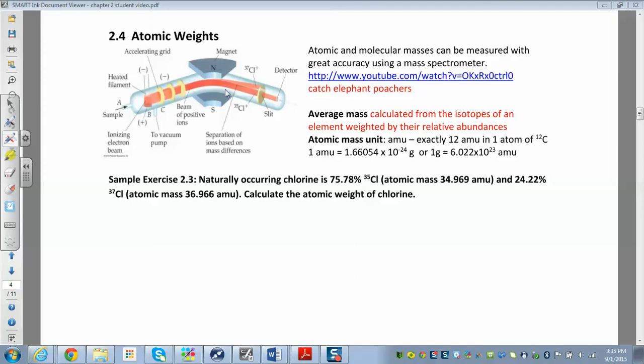and then it splits everything up based on what kind of isotopes you have. So if I had a sample of chlorine, chlorine has two isotopes that are readily abundant, so I have chlorine-37 and chlorine-35, and they're going to travel at a different speed. They're going to come out at a different time.